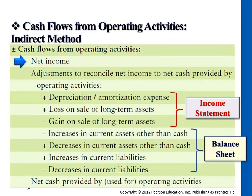As opposed to that, an increase in current liabilities — oftentimes accounts payable will increase. The journal entry on the other side might be increasing inventory or increasing some utility expense or different types of expenses. That amount that increased there was subtracted earlier from the expenses, but it's not a cash expense, so we add it back.